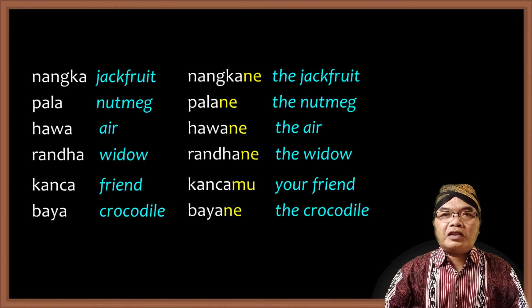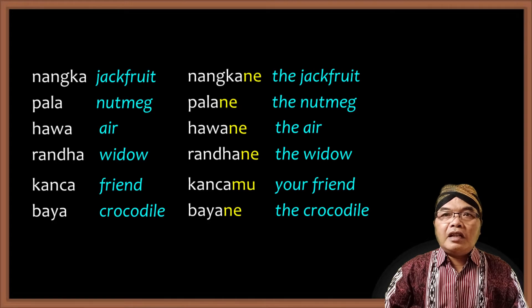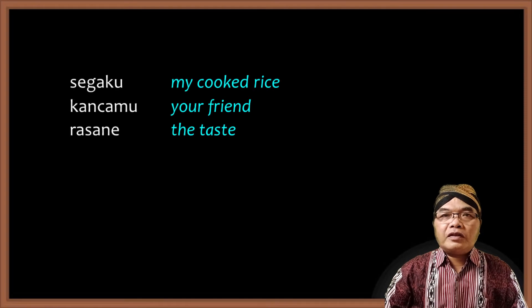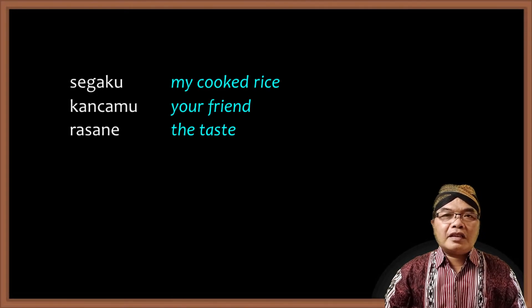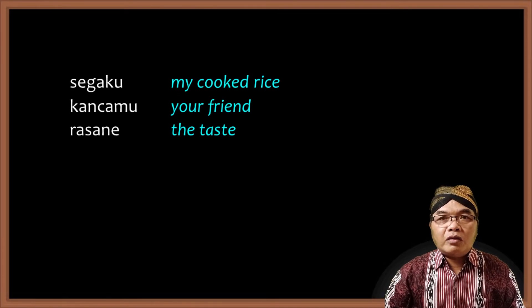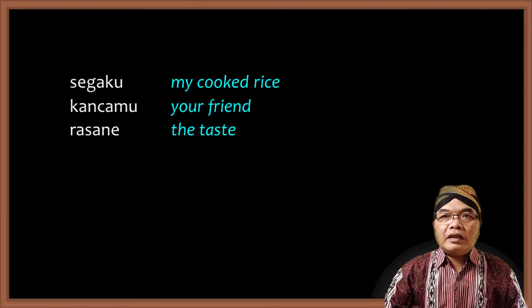This linguistic feature — the changing of O sound into A because of the endings — is very often ignored among young Javanese people. Instead of saying SEGAKU they say SEGOKU, instead of saying KANCAMU they say KONCHOMU, instead of saying RASANE they say ROSONE, and so on. But it is nicer and more natural to say SEGAKU, KANCAMU, RASANE, and so on.